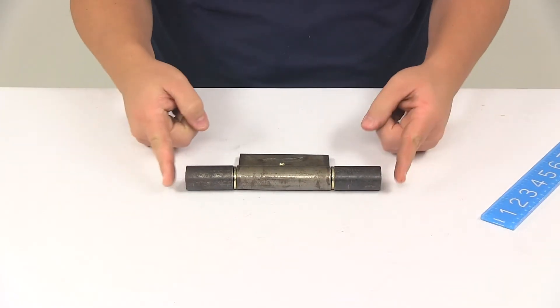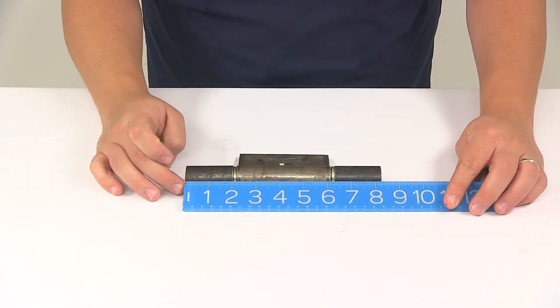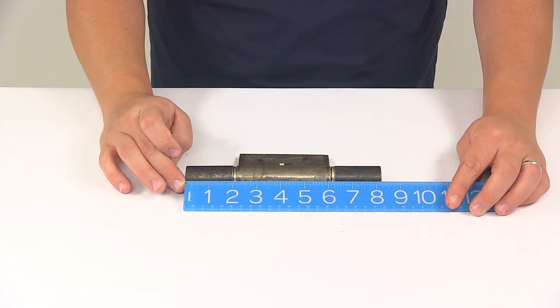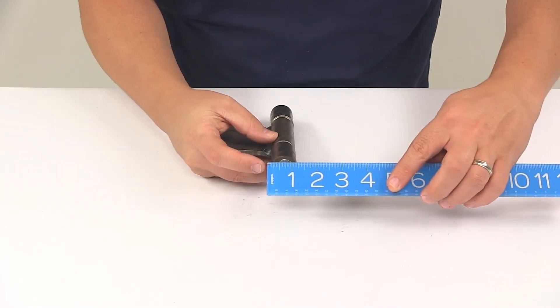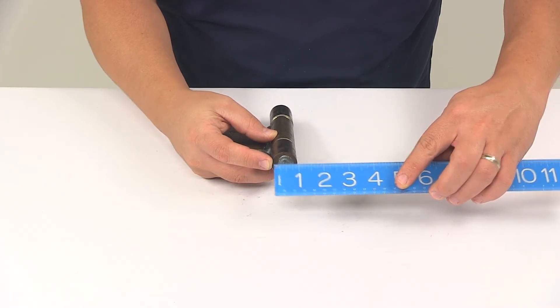The length edge to edge, we're looking at a measurement of eight and one quarter inches. And then the ends are going to have a diameter of right around one inch.